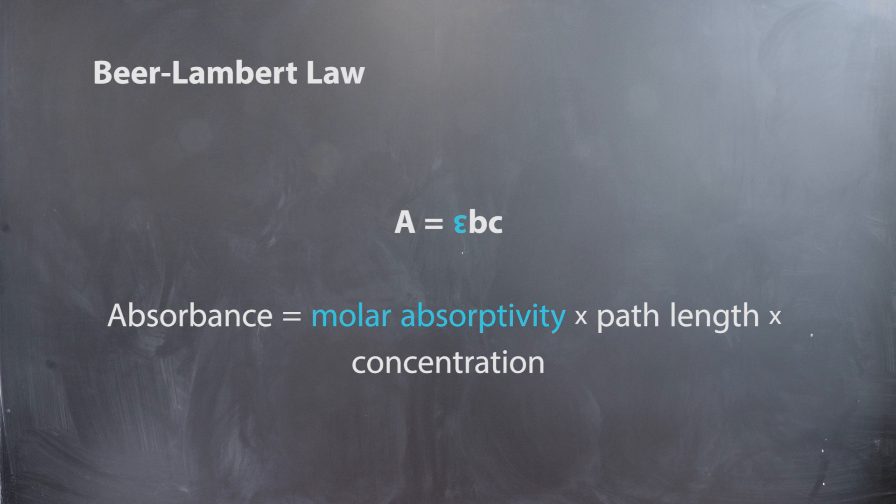The molar absorptivity is a constant characteristic of the absorbing solute. The path length is one centimeter. Since the same cuvette will be used for all readings, the path length will be constant as well. Hence, the absorbance will depend linearly on the concentration over a specific range of concentration values.